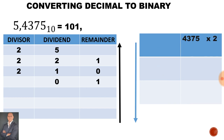In our calculator, we say 0.4375 multiply by 2, and that gives us an answer of 0.875. We have a 0 in our calculator, so once again we say 0.875 multiply by 2, and if we type that into our calculator we get an answer of 1.75.